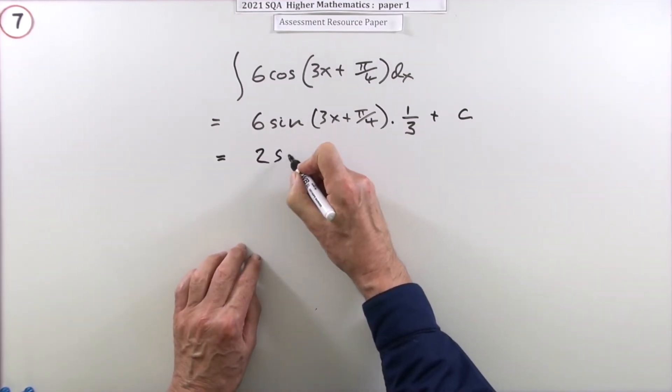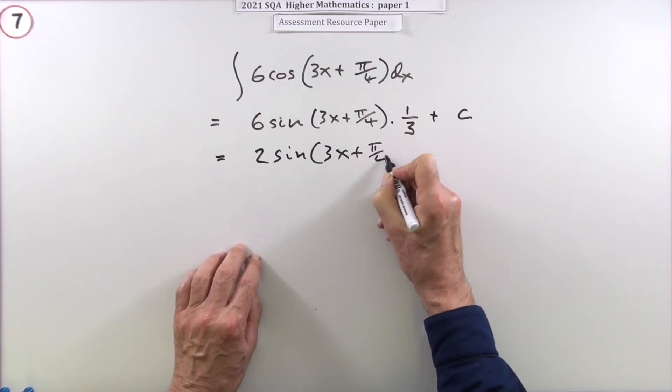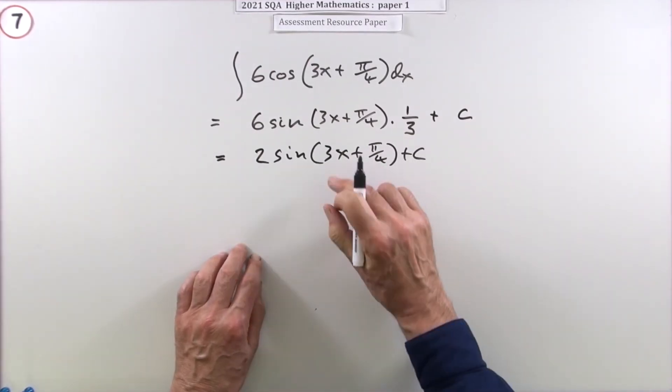Finish it off by saying, three into six is going to be two. So that's really two sine, three x plus pi upon four plus c. I would have gone to that.